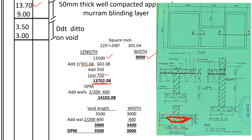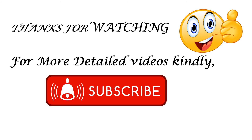That's why we get 13.70. The width shall remain 9.0. Then we shall deduct for the detail — the void — so it is 3,500 and this one is 3,000. I hope that is clear.